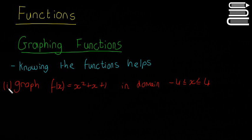So we'll look at this example first, just an easy one. I'll graph the function f(x) = x² + x + 1 in the domain -4 ≤ x ≤ 4. So this is a fancy way of saying basically graph this from minus 4 to plus 4.